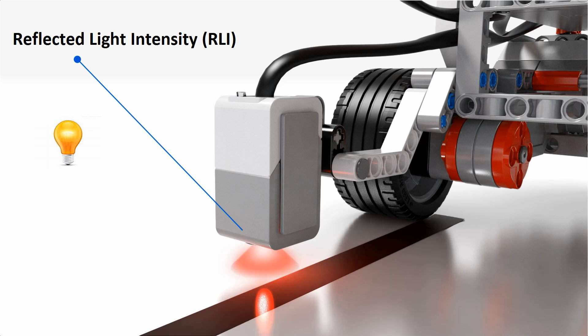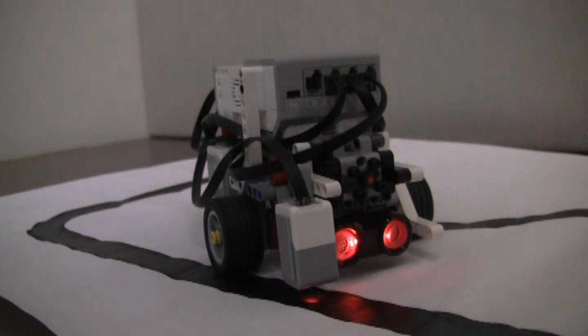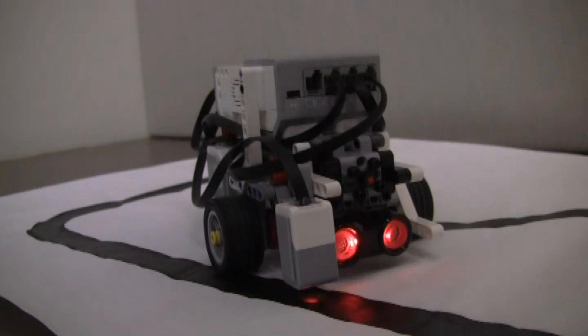To reduce the noise from other light sources, the sensor should be positioned close to, but not touching, the surface being measured. If you want to verify whether the color sensor's position is appropriate, turn on or off the room light and check whether the reflected light intensity value is still the same.